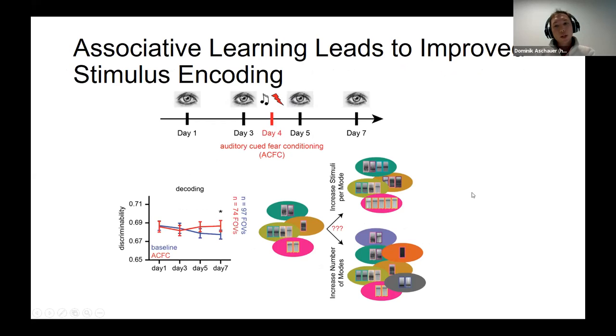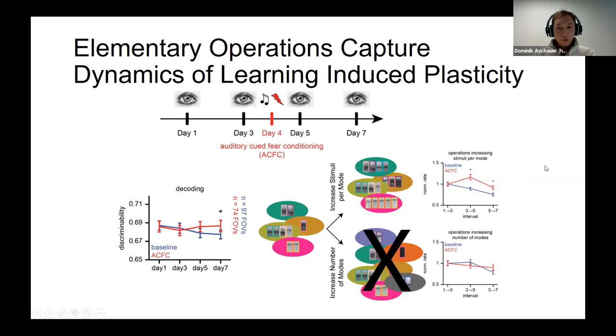Now finally, in order to test whether these operations are actually able to help us understand how the brain works, we made similar experiments with another cohort of animals which underwent an auditory acute fear conditioning paradigm in the middle of the recording experiments. We observed that after fear conditioning, neuronal populations showed a higher degree of encoding of sound stimuli, and this could be due to two different reasons. On the one hand, this increased encoding could be due to an increased mapping of stimuli onto given modes, or to an increase in the number of modes. And by using our framework of the ten elementary operations, we observed that between the two groups, we did not see a difference in operations increasing the number of modes, but specifically those operations were increased which increased the stimuli onto a given mode.